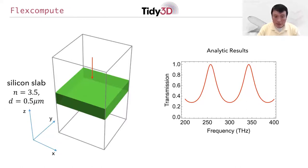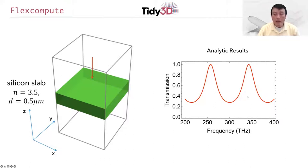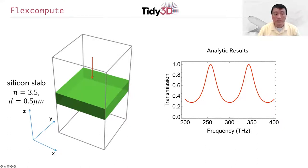For this simple system, the transmission spectrum can be computed analytically, and shown here on the right is the analytic result. What we'd like to show you is how to reproduce this analytic result with the finite difference time domain method, and in doing so illustrate some of the additional thinking and perhaps subtleties about the setup of the FDTD method.